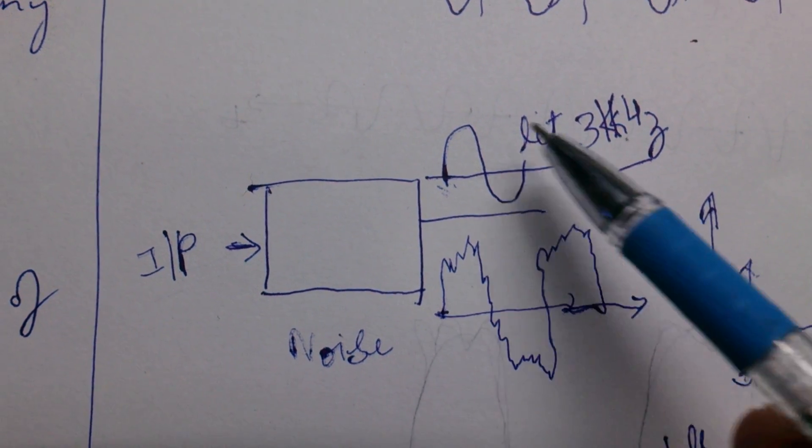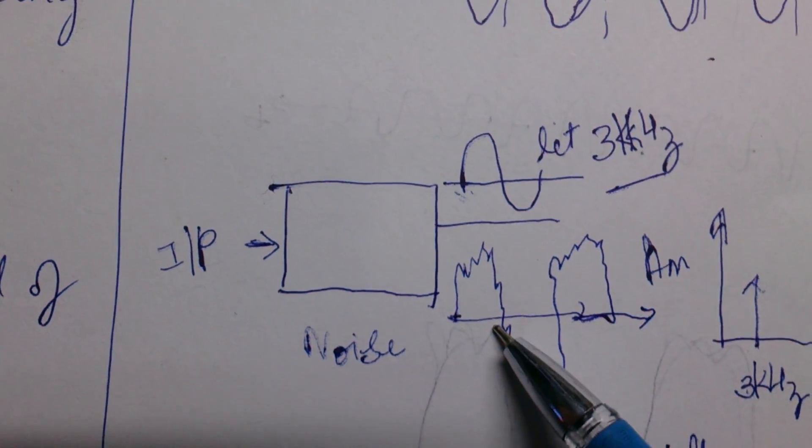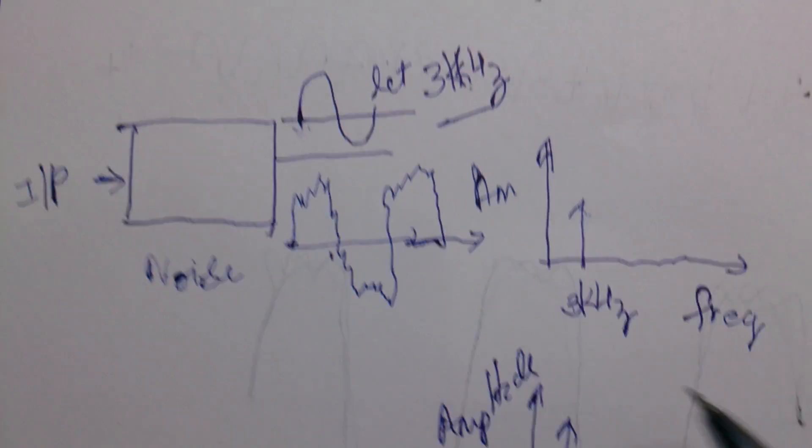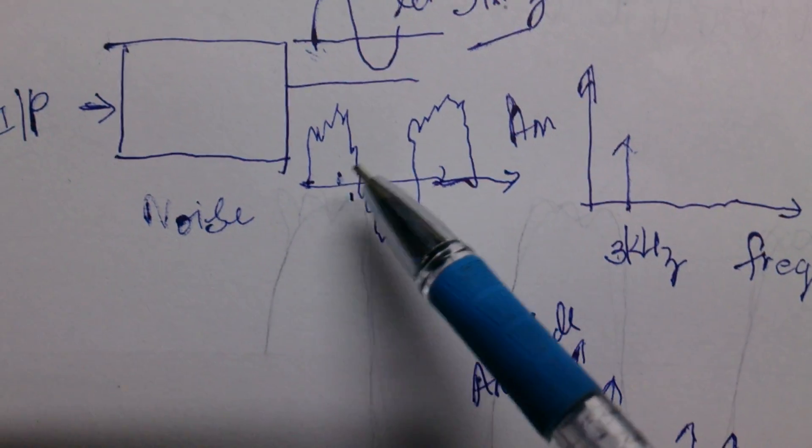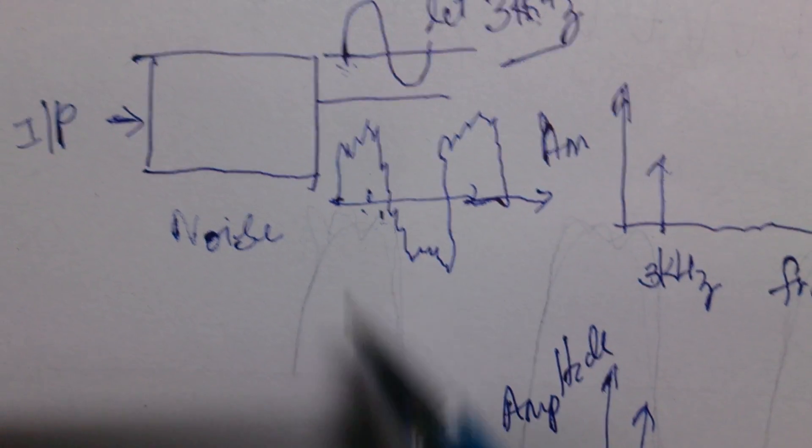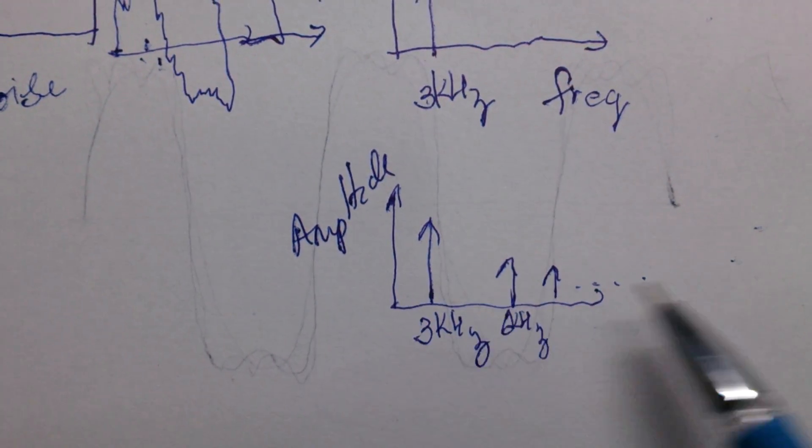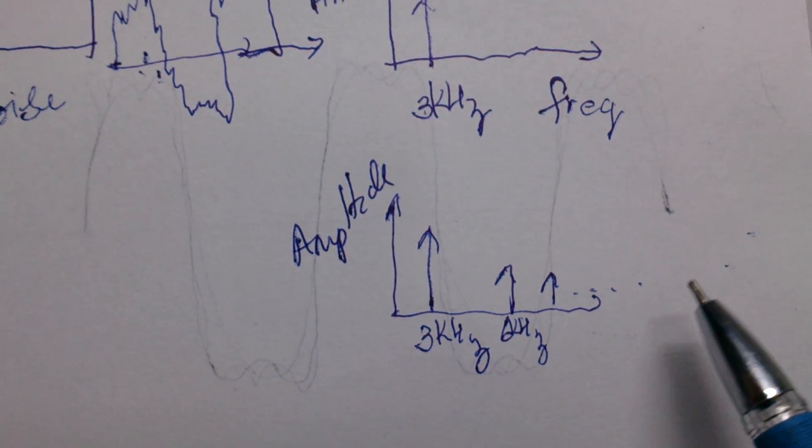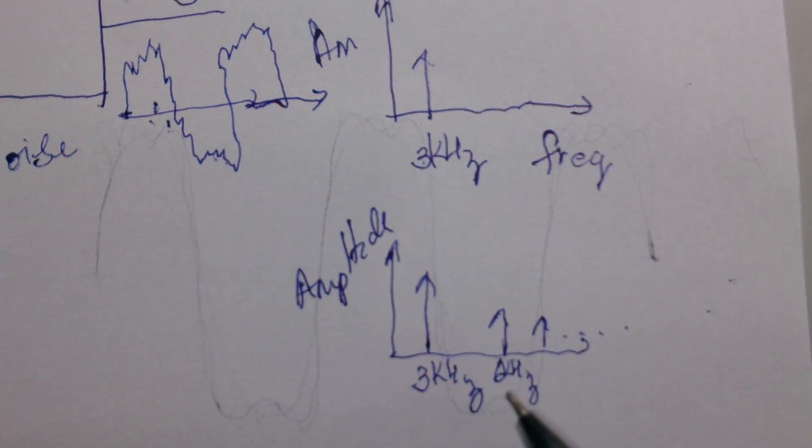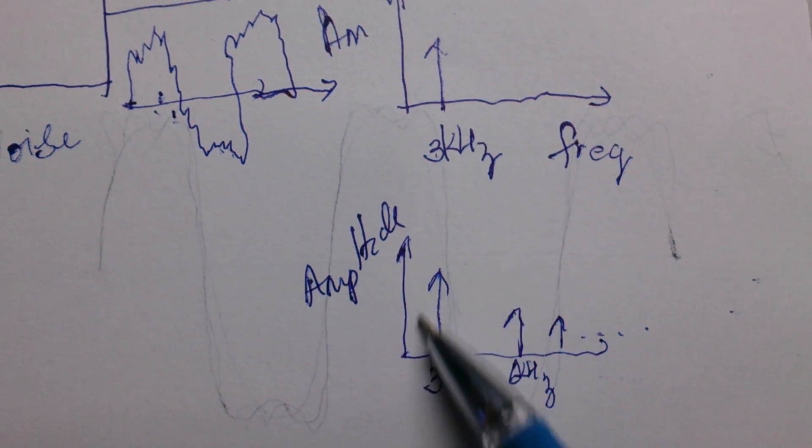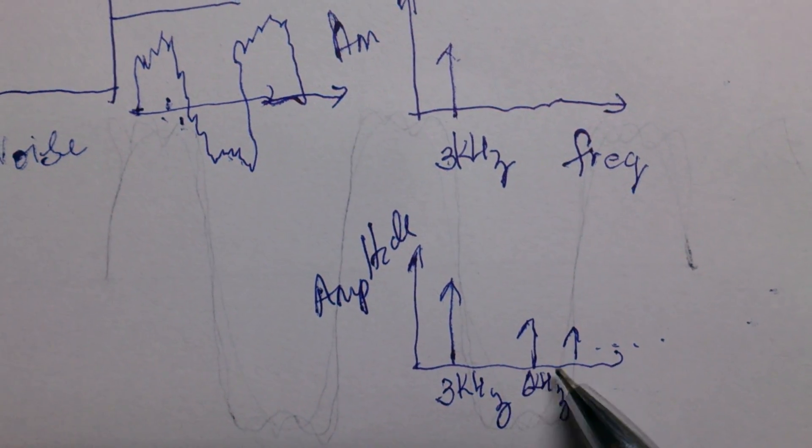For that reason we go for frequency domain. If we apply the same signal to a spectrum analyzer, the spectrum analyzer allows you to plot amplitude versus frequency. If you plot it, you may see a signal of interest at three kilohertz and apart from that you will be seeing some harmonics.